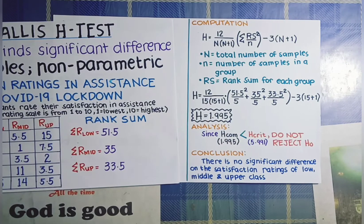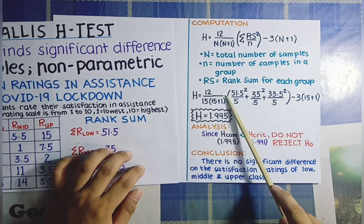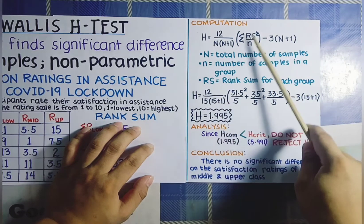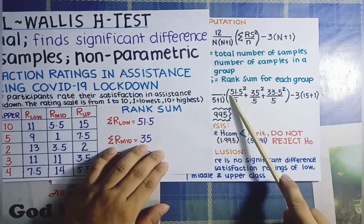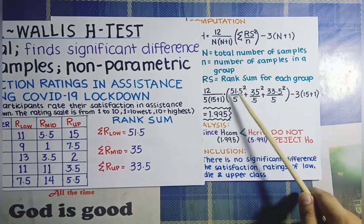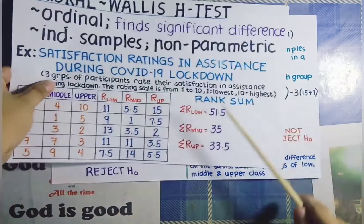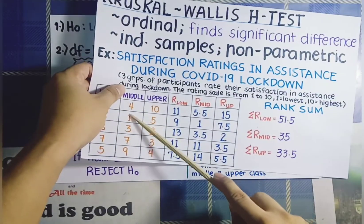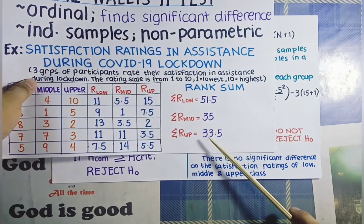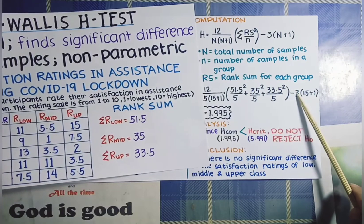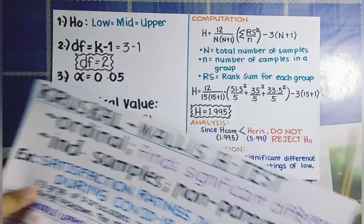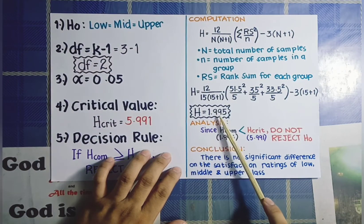Plugging in all the data: H = 12 / (15 × 16) × [(51.5² / 5) + (35² / 5) + (33.5² / 5)] − 3 × (15 + 1). By simplifying this equation in the calculator, we get H = 1.995.